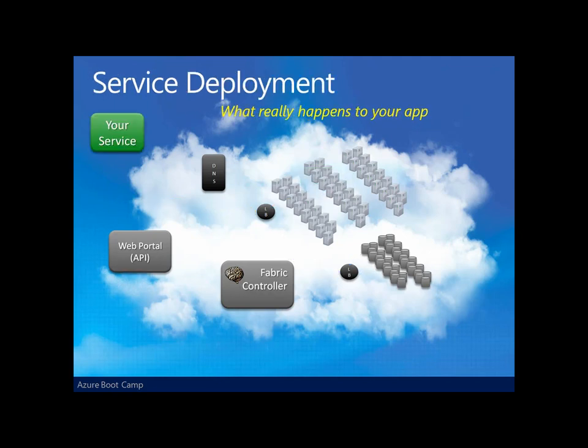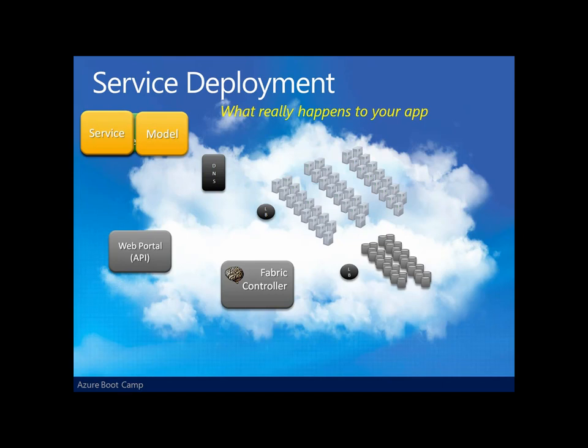Your service actually consists of two parts as far as the cloud is concerned: the service and the model. The service is your Azure application code that you want running in the cloud. The model is essentially configuration information that you provide to the fabric controller, which dictates how you want your service deployed and operating within the cloud.